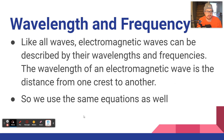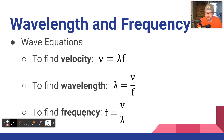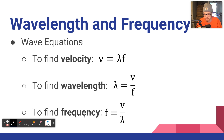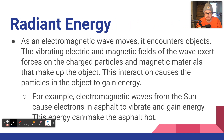Like all waves, electromagnetic waves can be described by their wavelength and frequency. We use the same equations: velocity equals lambda (wavelength) multiplied by frequency. If we need to find wavelength or frequency, we just rearrange accordingly. Nothing has changed there.